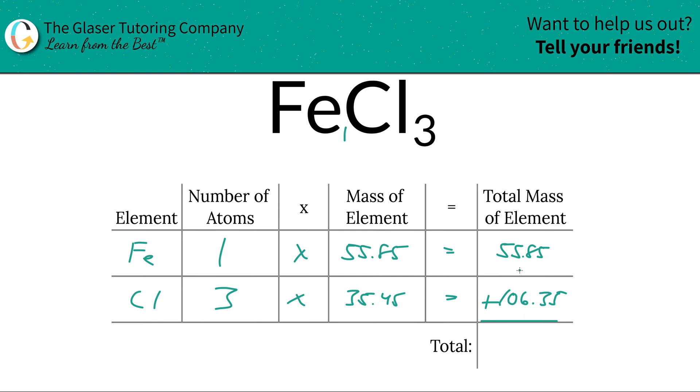And then to find the total mass of the compound, you're going to just simply sum up those total masses of all the individual elements. That's going to be 162.20. And the units down here are in terms of AMU. That's because we're finding the molecular mass.